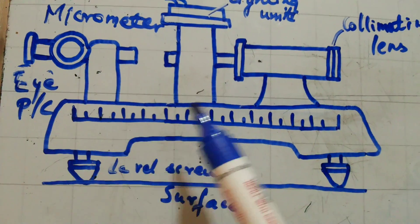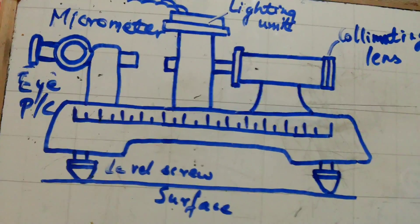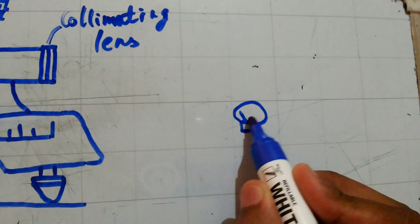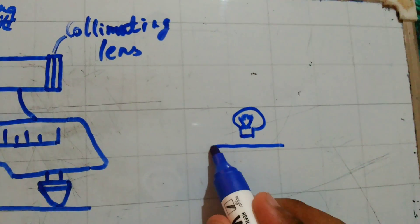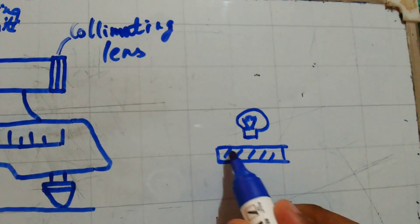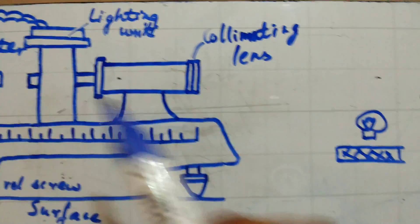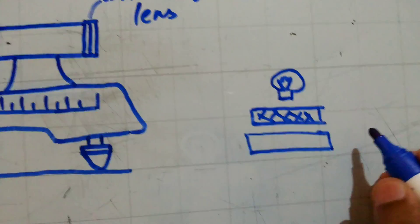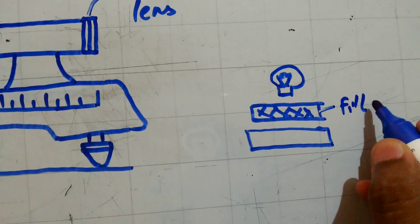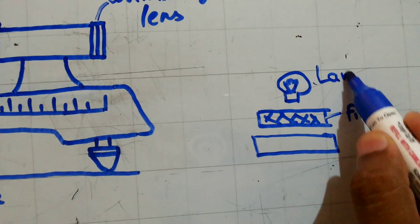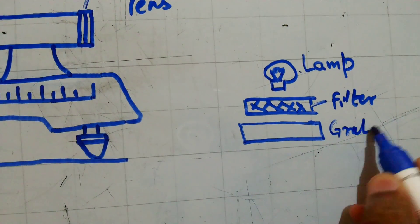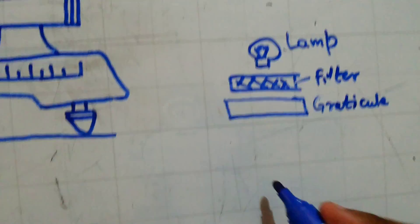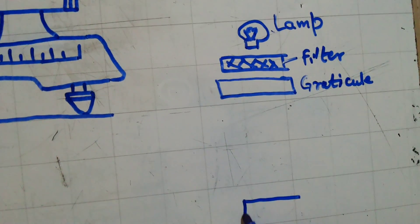Now let us see how it looks from within and how it works. There is a light source, and here you will have a filter. This is the filter, and then you have the graticule. This is the lamp or light source. This is the graticule, which splits the light coming from here.